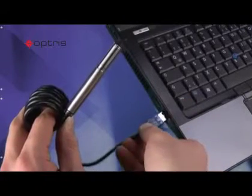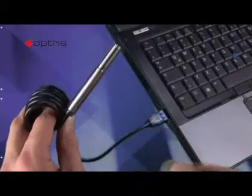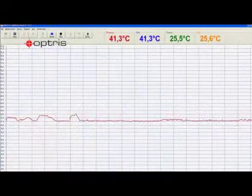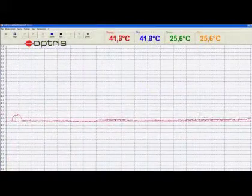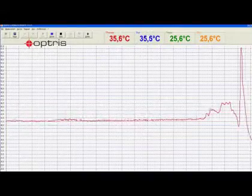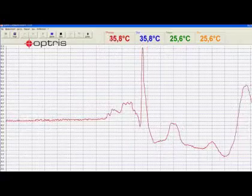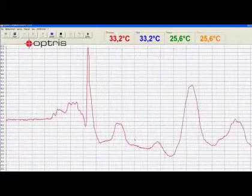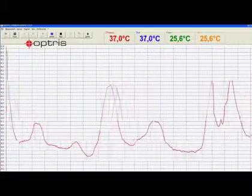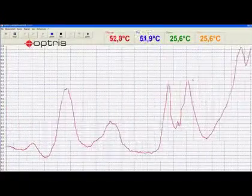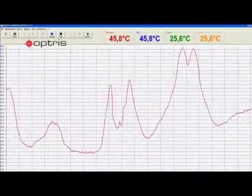The CompactConnect software has a fast temperature oscilloscope function, which fits perfectly to the Optris CS with a response time of only 25 milliseconds. Showing simultaneously different signals of the sensor like process temperature and actual temperature is very helpful to understand different signal processing functions.